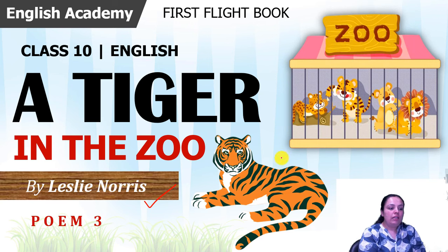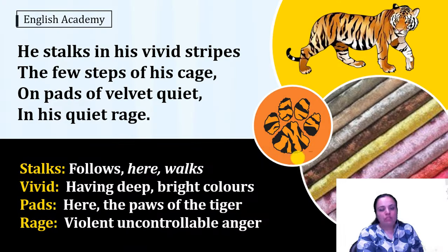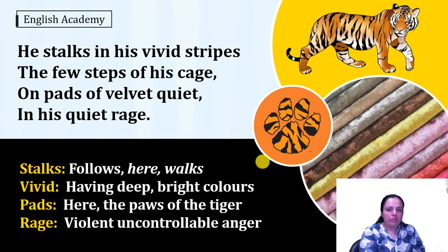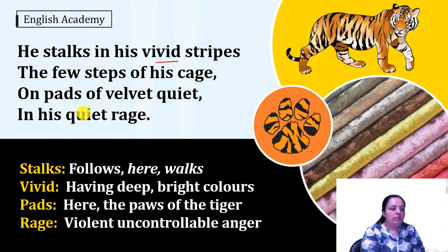Let us read this poem and we will see the difficult word meanings, the poetic devices, and we will explain the poem also. 'He stalks in his vivid stripes the few steps of his cage on pads of velvet quiet in his quiet rage.'